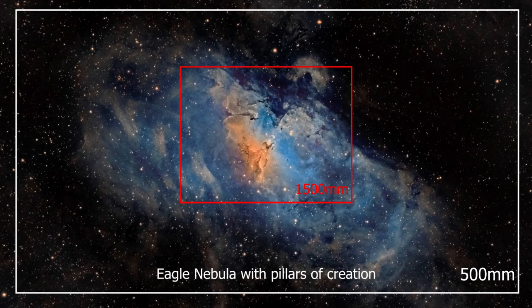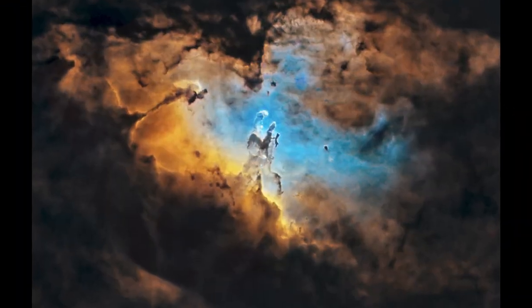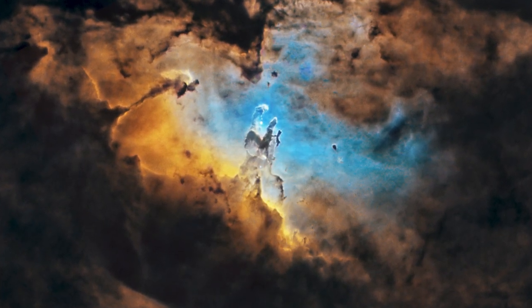The software used for capturing and processing deep sky images is different from that used for planetary imaging. Popular choices include Nina, the ASI Air, Sequence Generator Pro, Deep Sky Stacker, PixInsight, or Photoshop. As an example, here are two pictures I took of the Eagle Nebula and the Pillars of Creation — one at 500mm focal length showing the whole nebula and one at 1500mm focal length showing a close-up of the Pillars of Creation. When choosing a camera for planetary or deep sky astrophotography there are a few key things to consider.